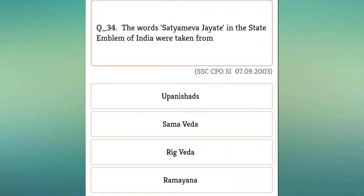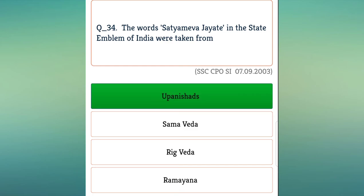The words 'Satyameva Jayate' in the state emblem of India were taken from where? They were taken from the Mundaka Upanishad, meaning 'Truth alone triumphs.'